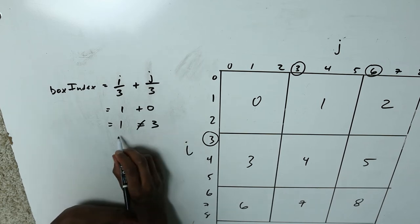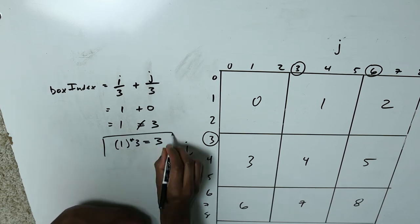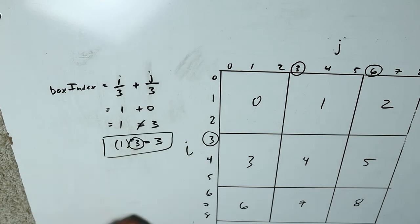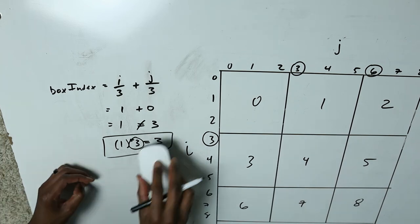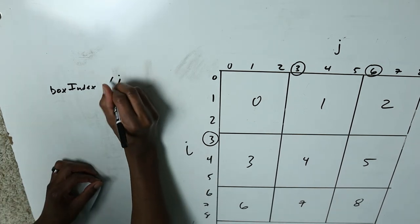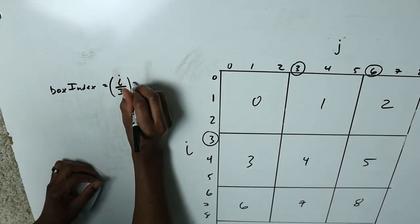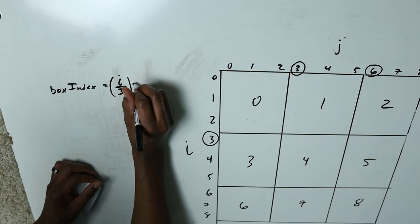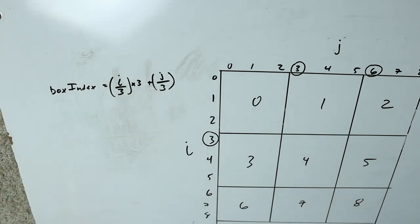The modified box formula is: box_index = (i / 3) * 3 + j / 3. Now let's give it some use cases and test this out.